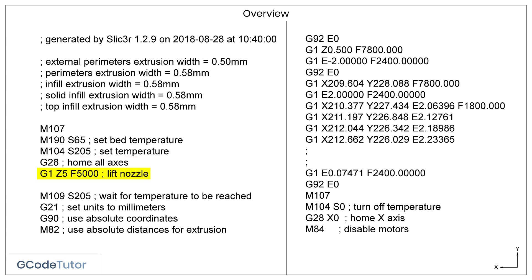G1 is our movement command — the G-code you will see most commonly throughout the entire program. G1 tells the machine to move from point A to point B and the amount to move. This line tells the machine to move Z 5mm upwards. We know it's upwards because it's a plus value. If it was a minus value, it would move downwards. The operator's note here says 'lift the nozzle' — it's lifting the nozzle 5mm in an upwards direction at a feed rate of 5 metres per minute.